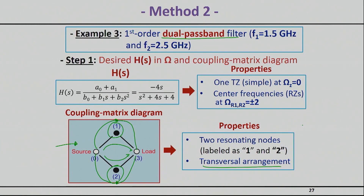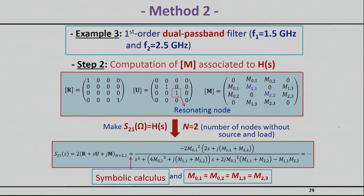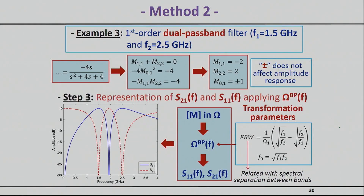This particular example implements a specific transfer function shown in the normalized frequency domain, with a first passband and a second passband. Going through the same math gives you the two passbands. In this first-order example the bands are not very sharply defined — each band has only one pole — but you can add more poles to get a sharper response for each band.